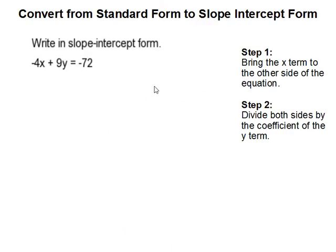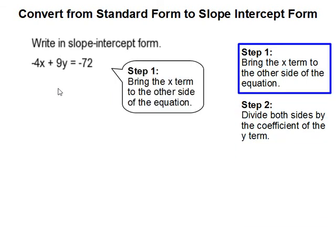Convert from standard form to slope-intercept form. Step 1: Bring the x term to the other side of the equation.